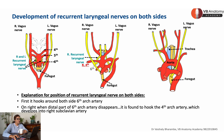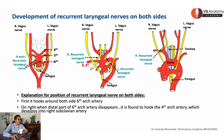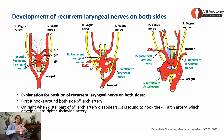With time, the fourth arch artery develops into the right subclavian artery. The left recurrent laryngeal nerve continues to wind around the sixth arch artery. The sixth arch artery on the left side forms the ligamentum arteriosum. So the left recurrent laryngeal nerve winds around the arch of aorta and begins to reach the tracheoesophageal groove.